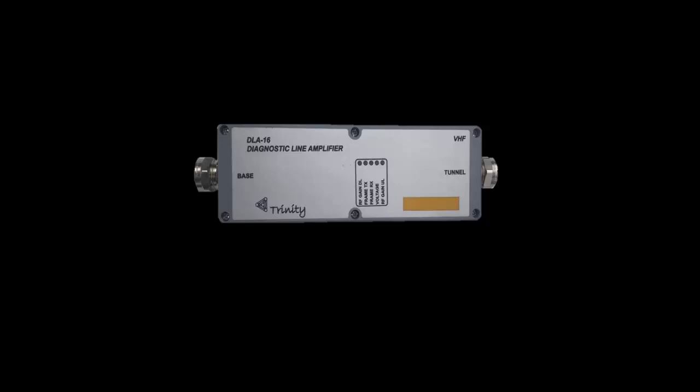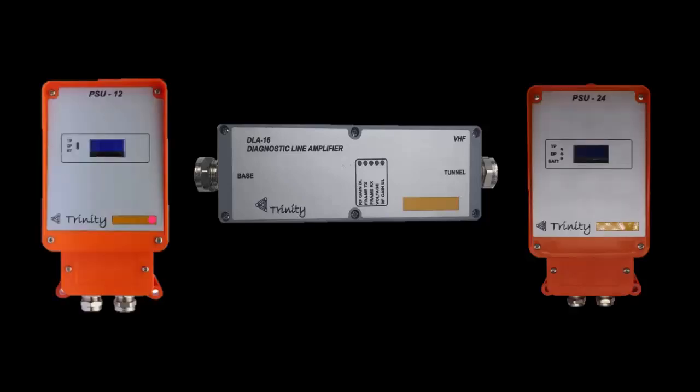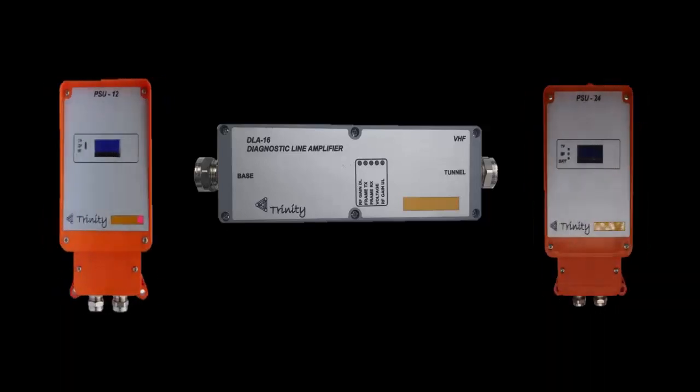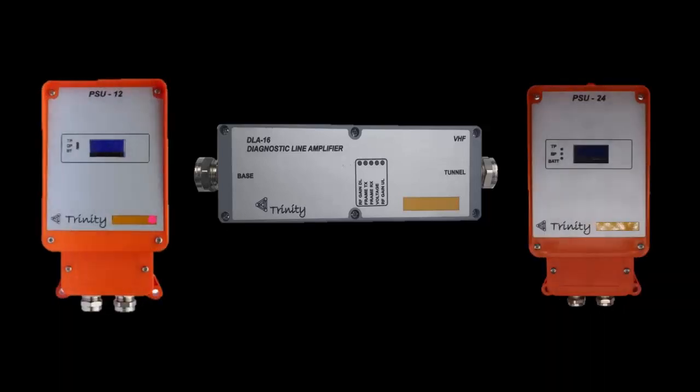The non-IS amplifier has an operating voltage of between 7 to 36 volts. This amplifier can be used in any 12 or 24 volt system with normal Trinity or other brands of Leaky Feeder power supplies with battery backup.